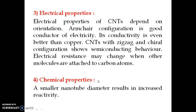The next property is electrical. Electrical conductivity depends on the orientation of the carbon nanotube. If it is armchair configuration, it is a very good conductor of electricity — its conductivity is even better than copper. If we consider zigzag and chiral orientations, they show semiconducting properties. Also, if some foreign molecule or atom is attached to the carbon nanotube, there is a change in the electrical resistance of that tube.